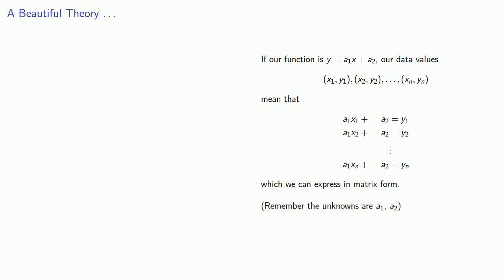Now here, remember the unknowns are a1 and a2. And so in matrix form, we want to find a1, a2, where Ax equals b, where A is our coefficient matrix, x is our column of variables, and b is our column of constants.